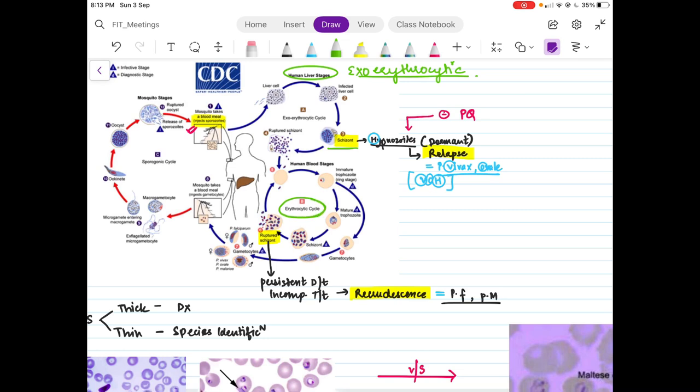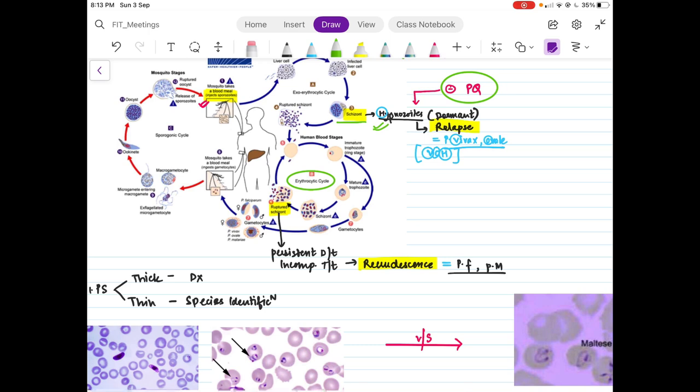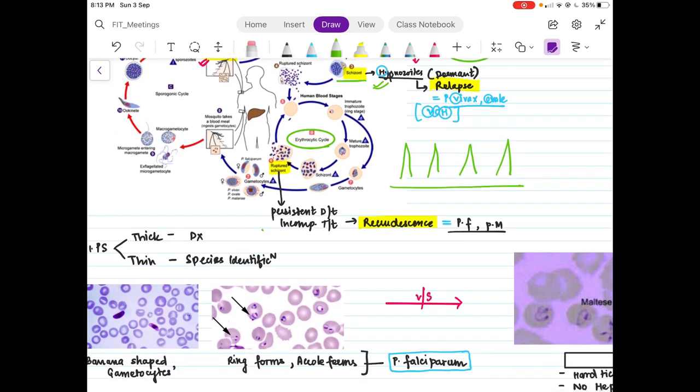It will infect the liver cells and form a schizont. Sometimes, whenever the schizont bursts and later infects the RBCs, you might have some which are latent which is known as the hypnozoites. These are the dormant forms. This causes the relapse, and it is this feature of hypnozoite formation is found in vivax and ovale. Now you will not have a relapse if you give a drug which is against the hypnozoites, and that drug is primaquine. PQ stands for primaquine. Coming to the erythrocytic cycle, whenever the erythrocytes rupture, they will lead to symptoms. So the fever spikes will come whenever you have erythrocyte rupture. Whenever there is persistent infection due to incomplete treatment, you will have a word which is known as recrudescence. This is relapse here, this is recrudescence. Recrudescence is a feature of Plasmodium falciparum which causes complicated malaria along with Plasmodium malariae.